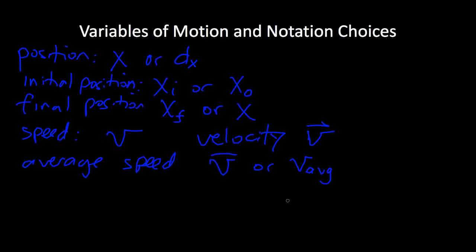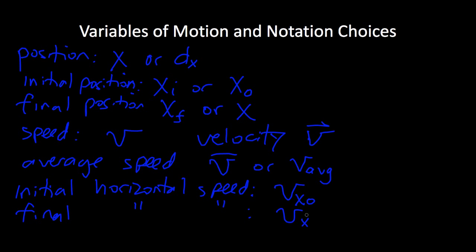When you start getting into directions, you've got to indicate two subscripts. For example, the initial horizontal speed could be depicted by V sub X sub naught. So it's got two subscripts. Of course, we could have the final horizontal speed, and that would be V sub X. Notice there's no needed subscript for final horizontal speed.